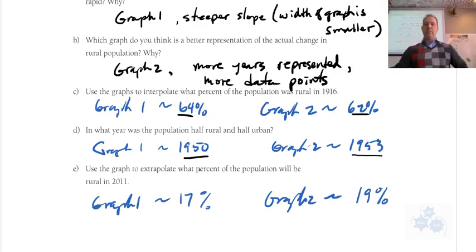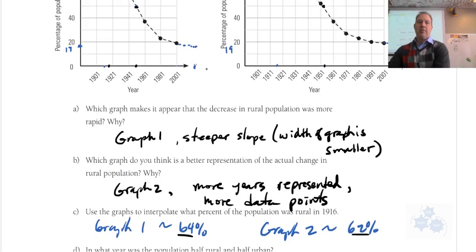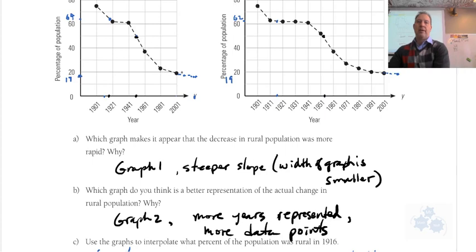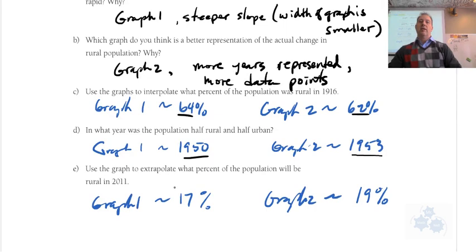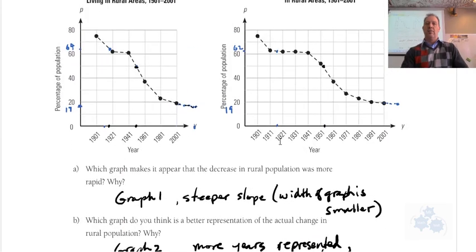Use the graph to extrapolate what percent of the population will be rural in 2011. With this graph over here, without as many points, it's steeper here and also flatter here. Actually, sorry, it's steeper here as well. So this decline will seem greater, and I put about 17% maybe in 2011. Over here it looks really close to 20, so maybe 19% in this one. Now if you had slightly different numbers, that's fine. The point is those numbers are going to be a little bit different if the graphs are shaped a little bit different. If we're missing data points, we can take a 20-year trend and apply that when really we could be taking only a 10-year trend and being a little bit more accurate.